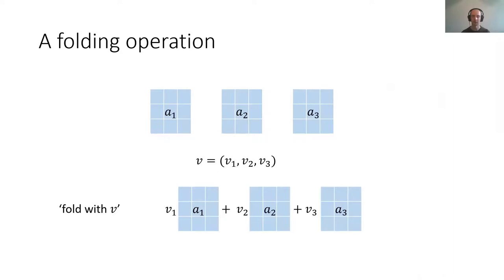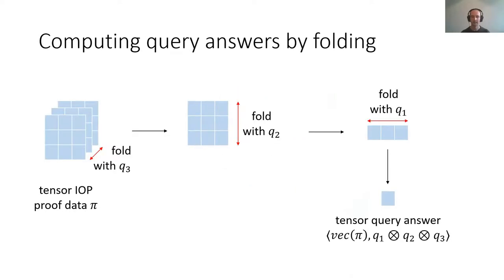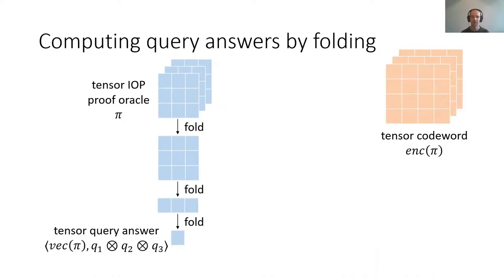I'll talk about a folding operation, which is really simple. If we have a collection of tensors or matrices or arrays A1, A2, and A3, and a vector V1, V2, and V3, then the folding operation simply takes the linear combination of the As using the Vs. Using this folding operation, we can describe the computation of a tensor IOP query answer sequentially by folding the three-dimensional tensor proof data — first with one component of the tensor query Q3 to get something two-dimensional, then with Q2, and then with Q1 — and this procedure gives you the tensor query answer in the end. So the tensor IOP proof oracle is connected to the tensor query answer by this sequential folding operation.